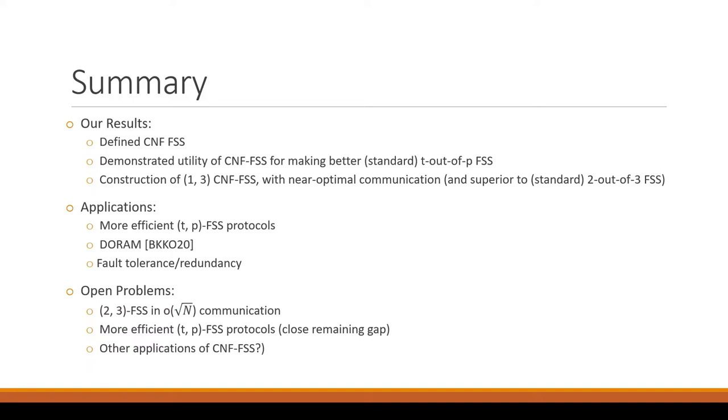So as open problems, can you use either CNF FSS or some other mechanism to improve upon two out of three case, which currently best known is root N? Anything less than root N would be interesting. Our first result showed how to do two out of five in less than root N, namely N to the one-fourth communication. Can we shave this down even further for three players? And in general, our first result also works for certain parameter choices of T and P. Two and five was a convenient application, but thinking back on the restriction that P has to be at least T times some parameter D plus one, so this works well in certain parameter regimes for T and P. But in general, can we solve T out of P FSS in less communication and close the theoretical gap of log N communication versus best known?